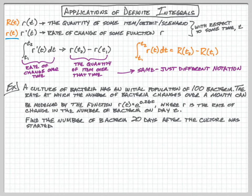Speaking of problems, here's a big example for us. A culture of bacteria has an initial population of 100 bacteria. The rate at which the number of bacteria changes over a month can be modeled by the function r(t) = e^(0.26t), where r is the rate of change in the number of bacteria on day t. We want to find the number of bacteria 20 days after the culture was started.